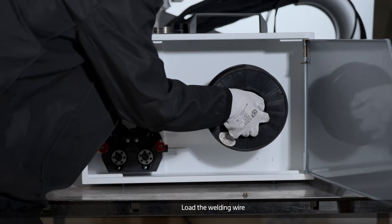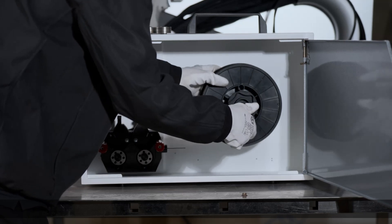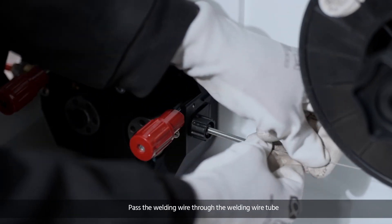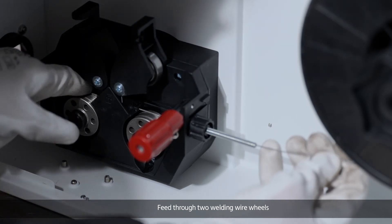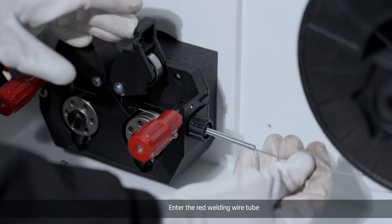Load the welding wire. Pass the welding wire through the welding wire tube, feed it through two welding wire wheels, and enter the red welding wire tube.